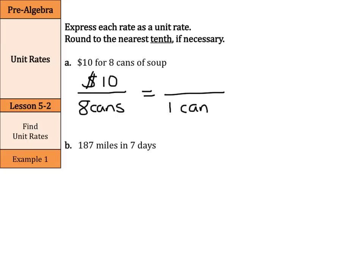So again, we'll divide the bottom by 8 and the top by 8. And 10 divided by 8 is $1.25 for one can. That's a unit rate.